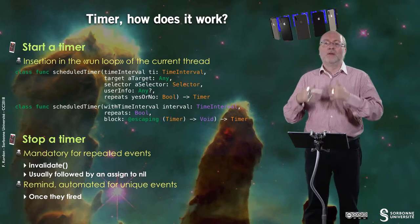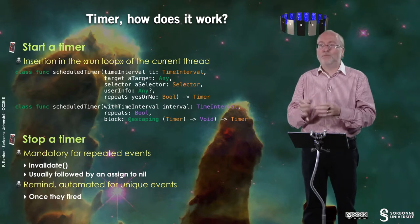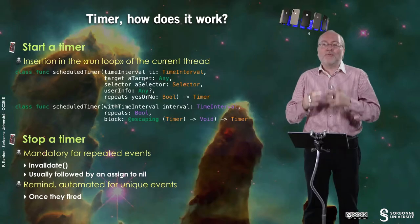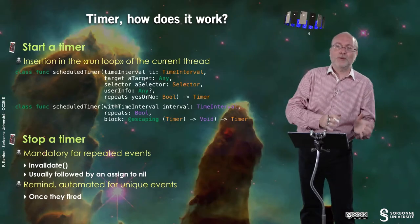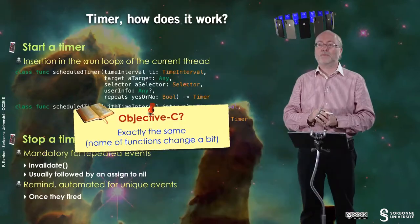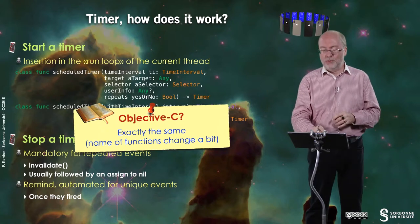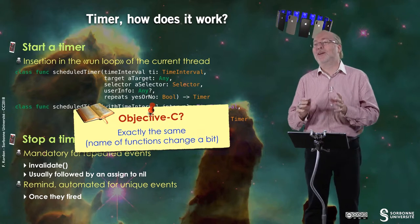You may block an event that has been scheduled just once but has not yet triggered — for example, if you want to change your alarm clock wake-up time. So you don't have to use invalidate only for repeated events; you may also use it for unique events, but it's a nonsense if the event has already occurred. In Objective-C, it's exactly the same, but of course the names of the functions change a bit.